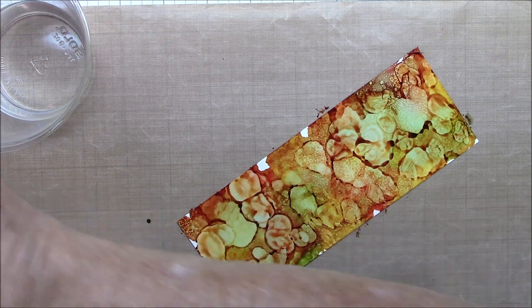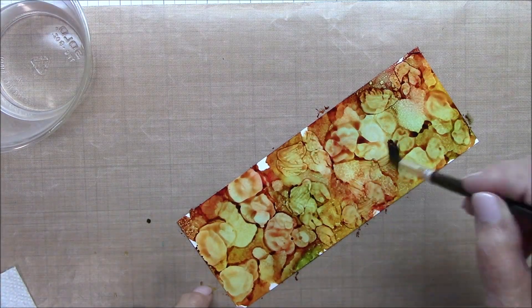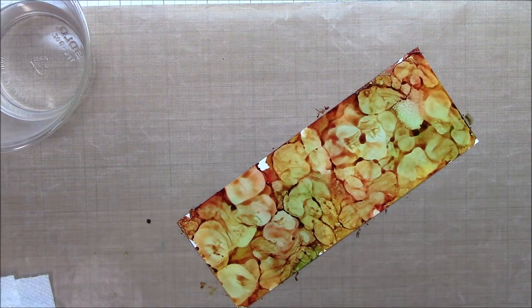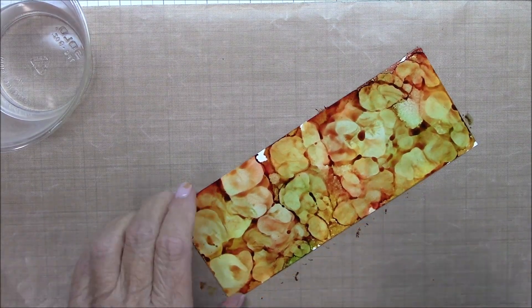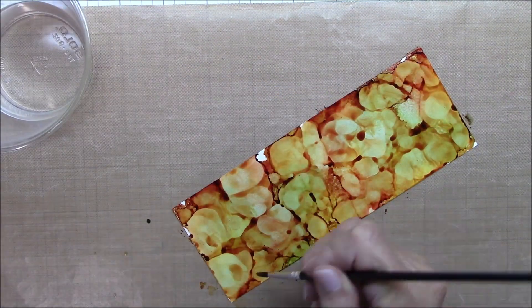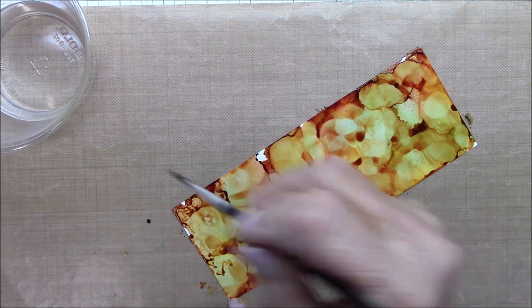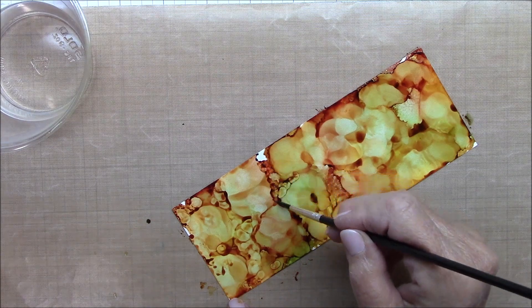And then I spritz it with my mini mister, which has just clear alcohol in it. And then I start with a smaller brush moving things around, adding alcohol, clean alcohol, just to spread out the areas of color. This is what I call working my colors.